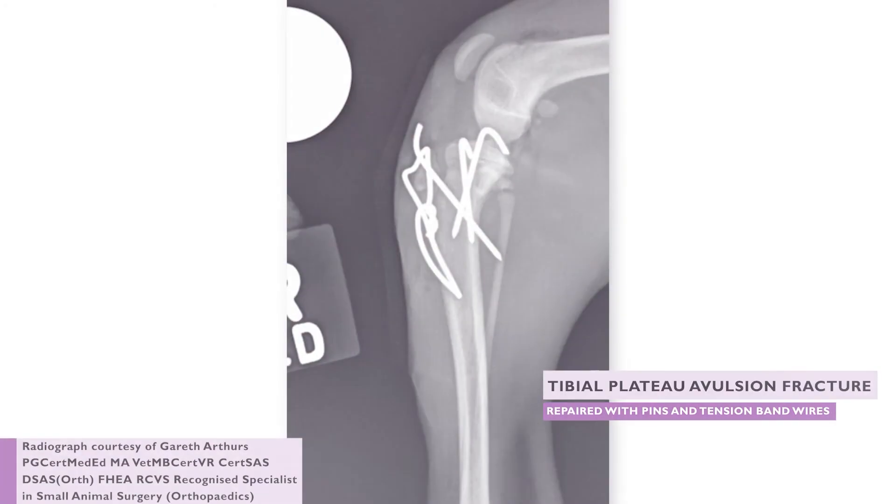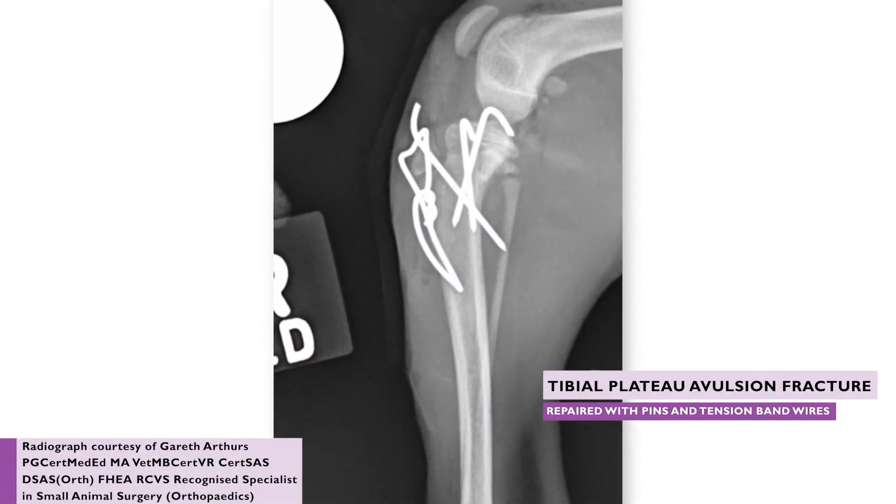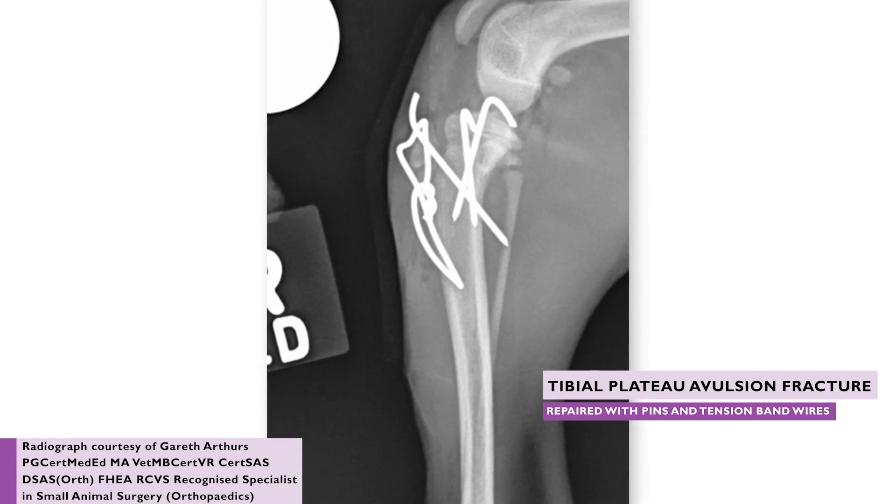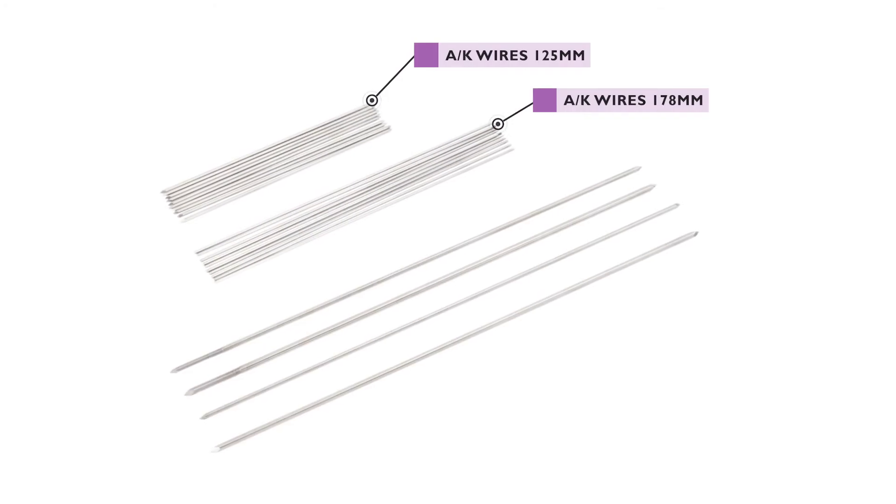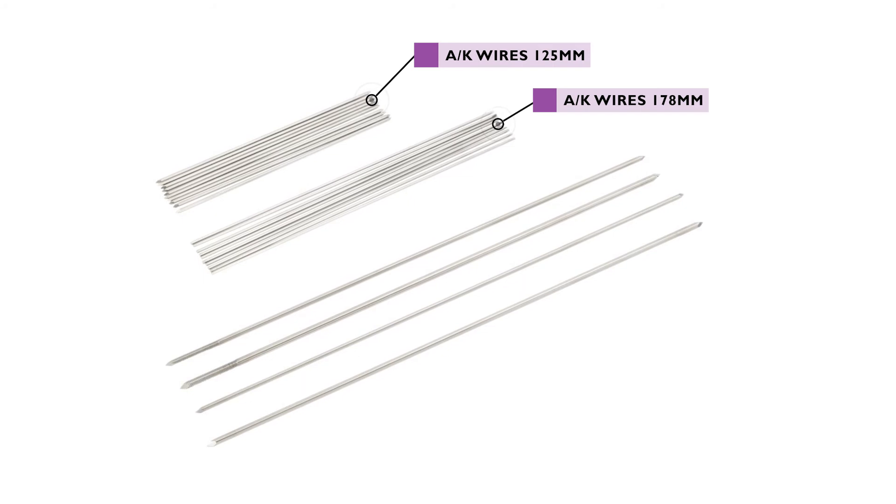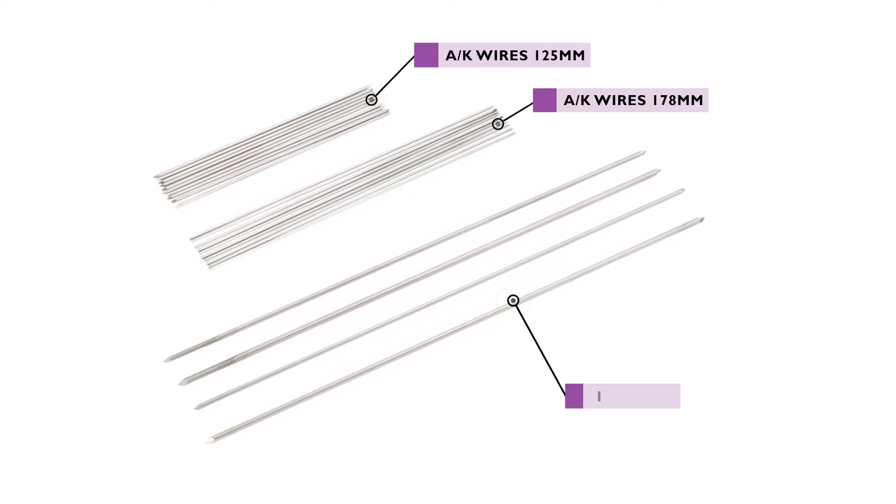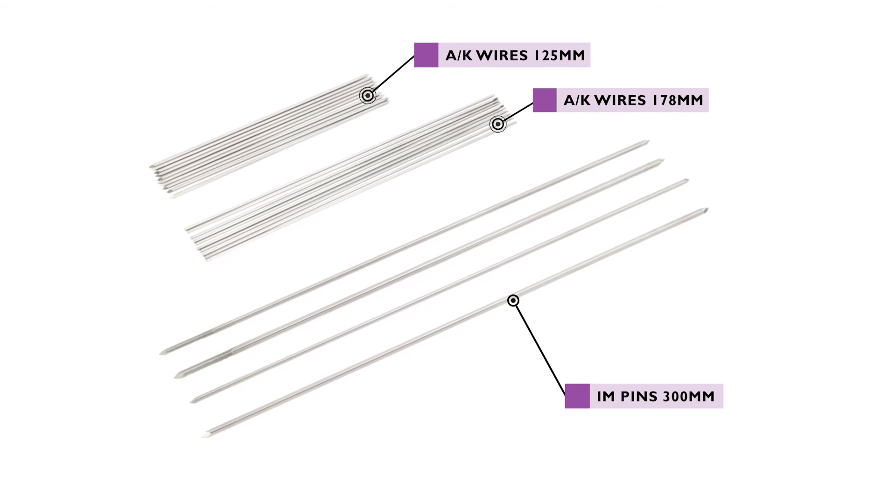A and K wires are often used for internal fragment fixation. The choice between A and K wires will largely come down to surgeon preference. A and K wires are available in a broad range of sizes and two different lengths. Steinmann intramedullary pins or IM pins are 300 millimetres in length.